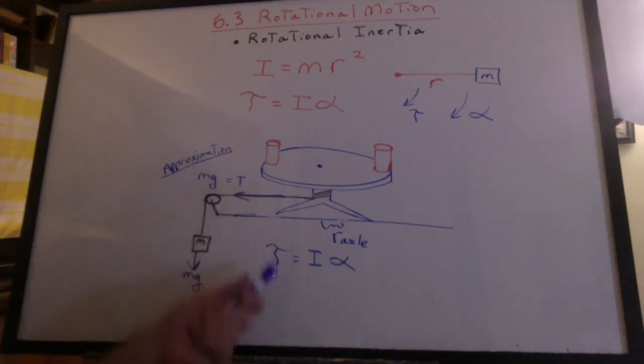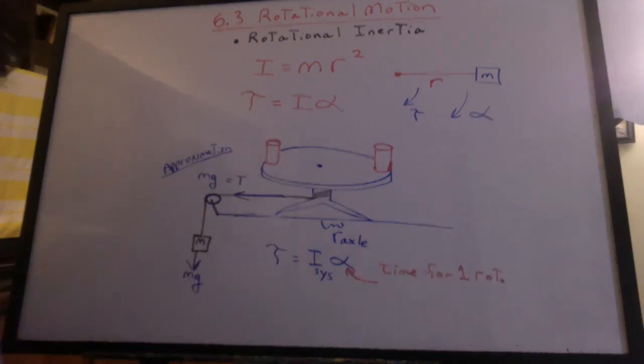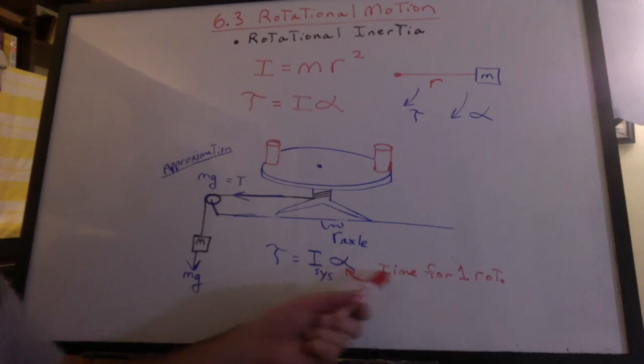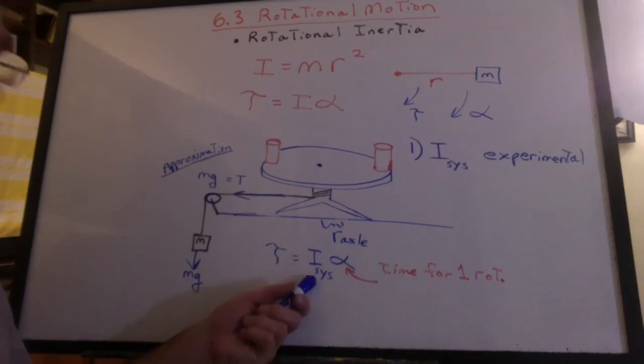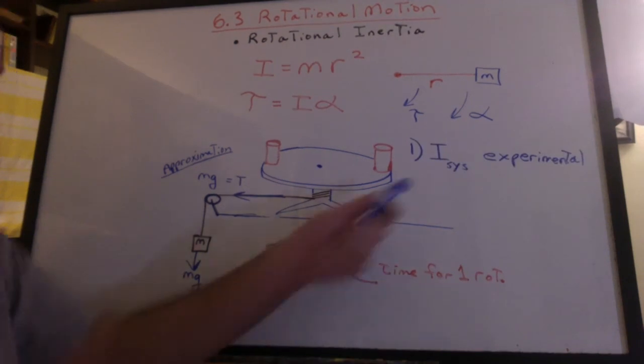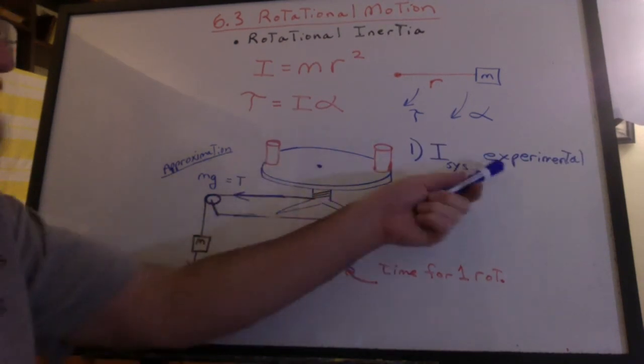Well, that torque will be equal to I alpha. I being the rotational inertia of the system. You can get the alpha from the time that you measured on the video for the one rotation. So this is going to be the inertia of the system experimentally.